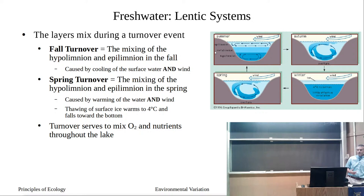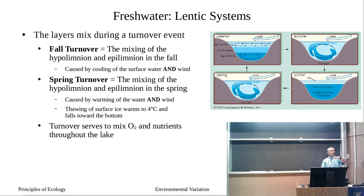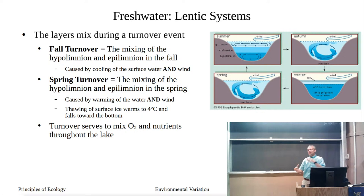Turnover events happen in the fall and can happen in the spring — it's basically a complete mixing of the lake. Why does it happen? We have stratification: warm epilimnion on top, cold hypolimnion at the bottom, thermocline marking the transition. In the fall, the surface cools, the density increases and that water wants to fall. But that's only part of the story — you also need wind to agitate the surface and set up circulation to get that colder water to break through the thermocline.